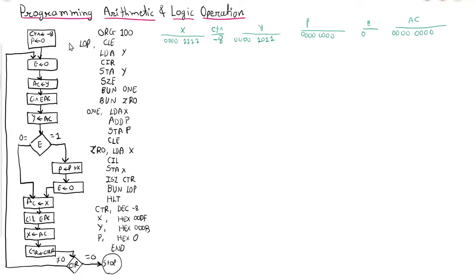So let me tell you what the procedure or program will be. Here we will take two 8-bit numbers X and Y, and we will take a third memory location to get the output, and we will use the accumulator. This is the flowchart for the same, and this is the program for this flowchart. Let us start executing the instructions one by one so we can get an idea.